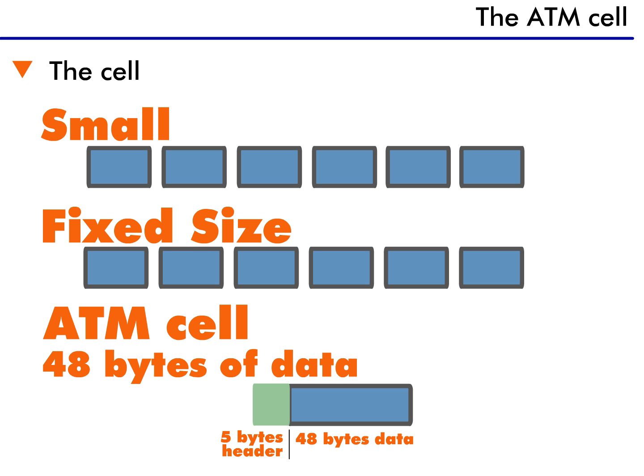By the way, ATM cell size was really a compromise. The voice industry wanted a size of 16 bytes, and the data industry wanted 128 bytes. They both compromised on 48 bytes of data with 5 bytes of addressing information. This gives us an ATM cell size of 53 bytes.